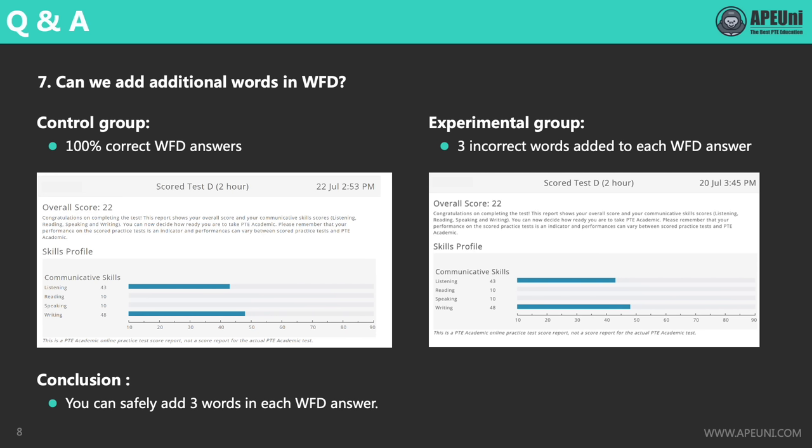Some of you may question whether adding words will have an impact on the listening and writing scores. We have done an experiment on it. The control group answered all WFD questions with 100% correct answers and got 43 in listening and 48 in writing. The experimental group added three incorrect words to each WFD answer and got the same scores — 43 in listening and 48 in writing. Therefore, it's safe to say that adding three words in each WFD answer will not cause us to lose any marks. However, we do not recommend adding too many words, as Pearson's scoring algorithm is constantly being updated and may become stricter at any time.